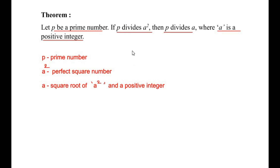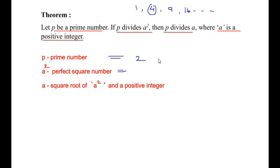Now to explain this theorem, let me take some values. I will take the prime number as equal to 2. And perfect square numbers are 1, 4, 9, 16 and so on. So I am going to take the number 4 in this case. And a is the square root of a squared, so square root of 4 is 2, and 2 is also a positive integer. So just for example's sake, I have taken these numbers.